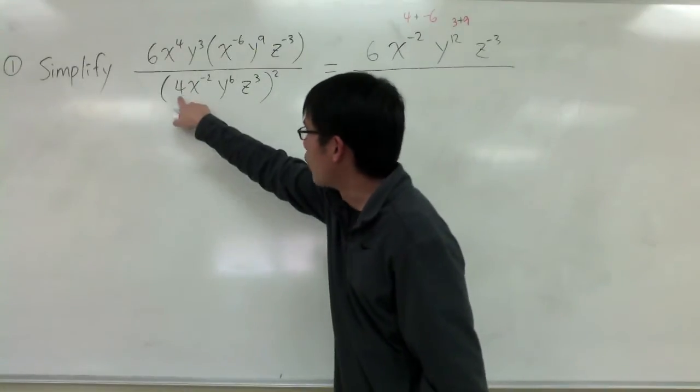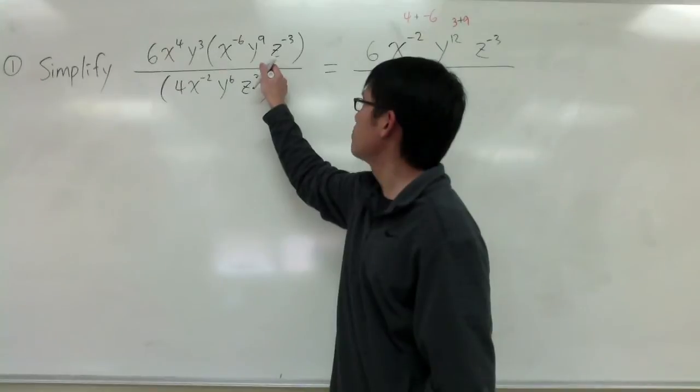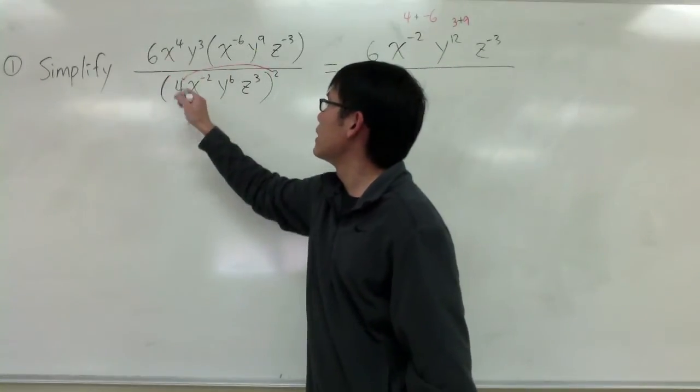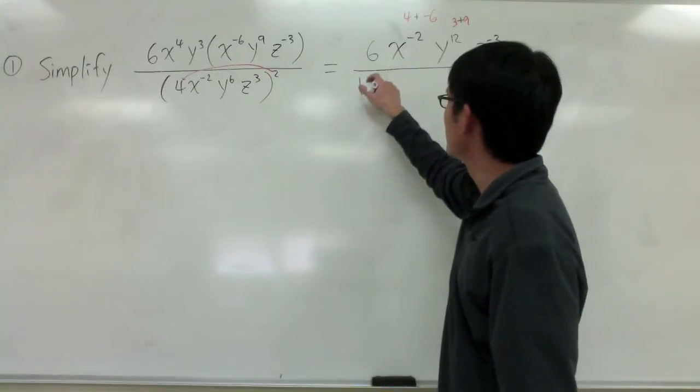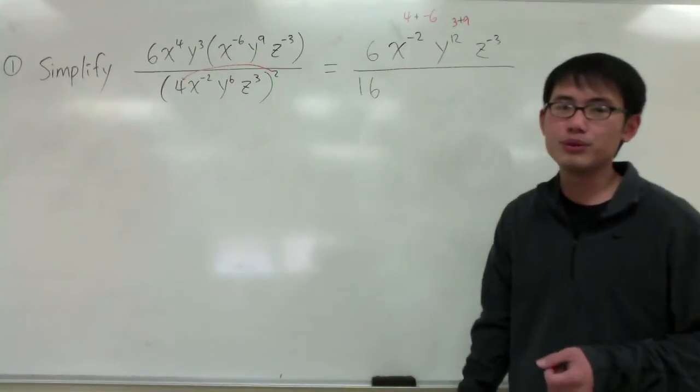So, I have 4, 4 to the second power. And let me, perhaps I'll show it like this. I'm looking at this as 4 to the second power. And 4 to the second power, it's 16. We can compute it right away.